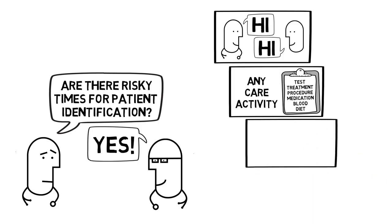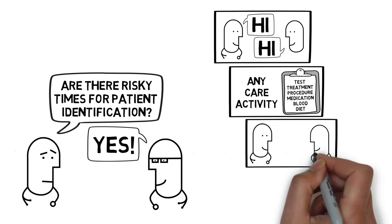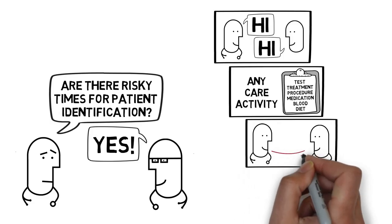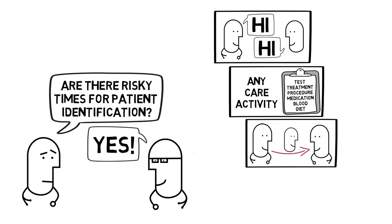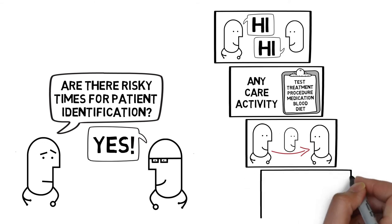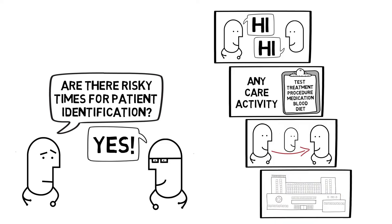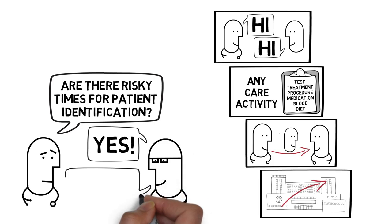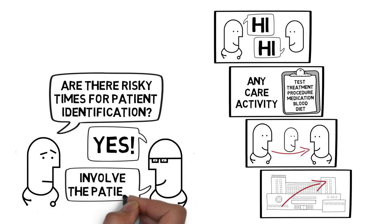The third risky time is when we're transferring care of a patient to another healthcare provider — an example may include shift change. If we get patient identification wrong during handover, we're setting everyone up for a disaster. The last risky time is when we're transferring a patient to a new unit or ward. We are likely moving them from a location where they are well known to somewhere where nobody knows them at all, so making sure that new patients on a ward are properly identified is critical.